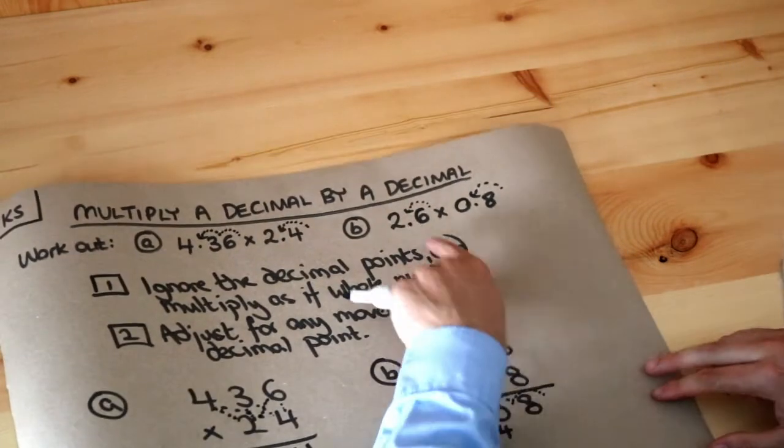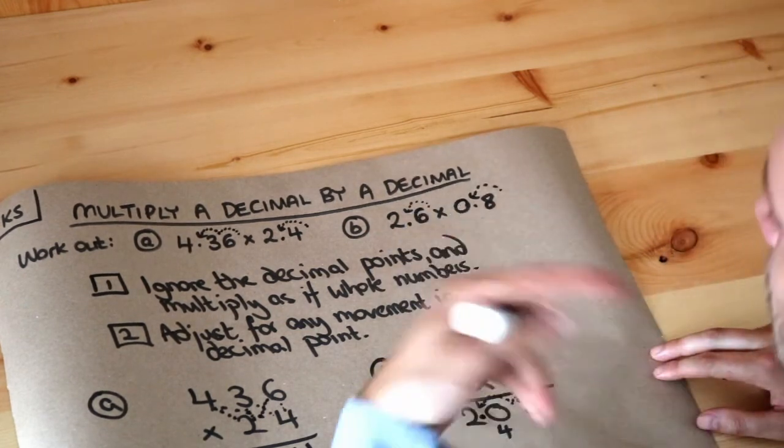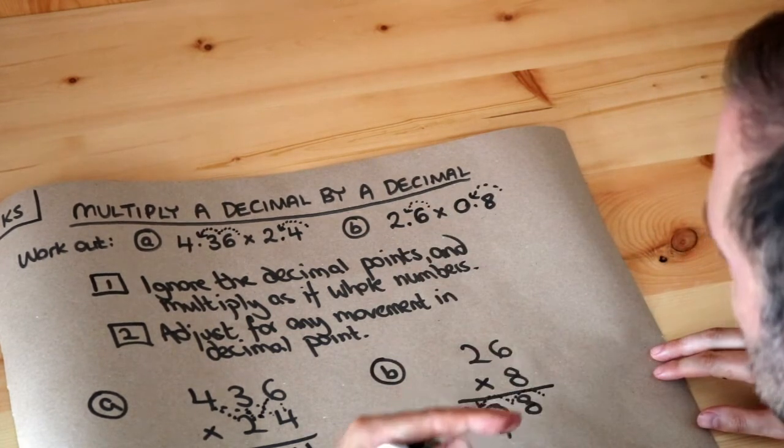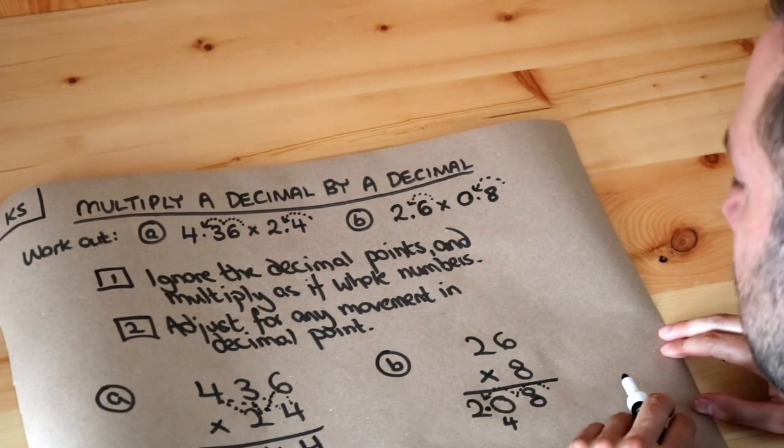Let's just do a common sense check. We're timesing 2.6 by a number just slightly less than 1. When you times by a number slightly less than 1, it's going to make it a bit smaller, so we do end up with a number slightly smaller than 2.6, so that looks about right.